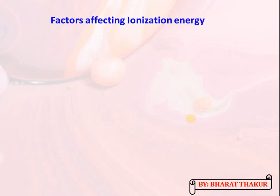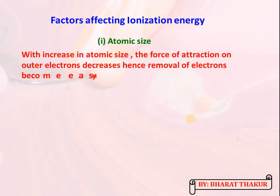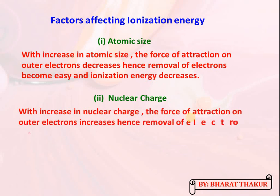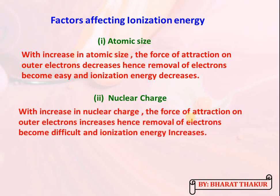Now, the factors affecting ionization energy. The first factor is atomic size: with an increase in atomic size, the force of attraction on the outer electron decreases, so removal of the electron becomes easy and ionization energy decreases. The second factor is nuclear charge: with increasing nuclear charge, the force of attraction on the outer electron increases, electrons are more tightly held, and ionization energy increases.